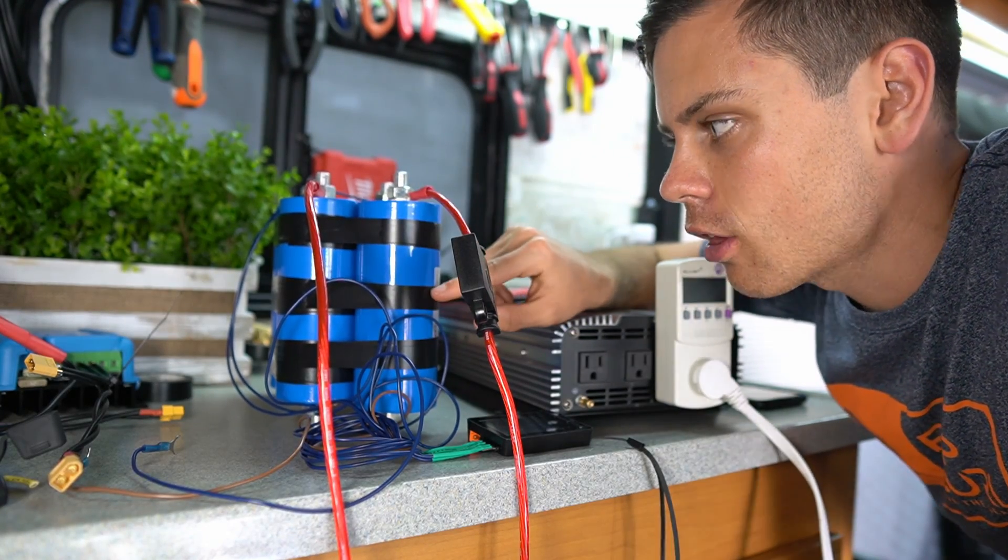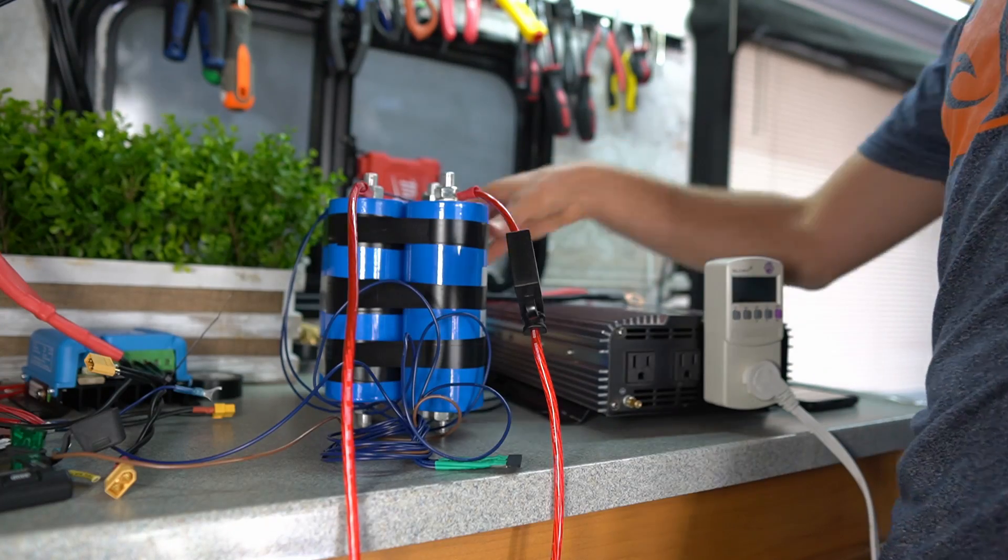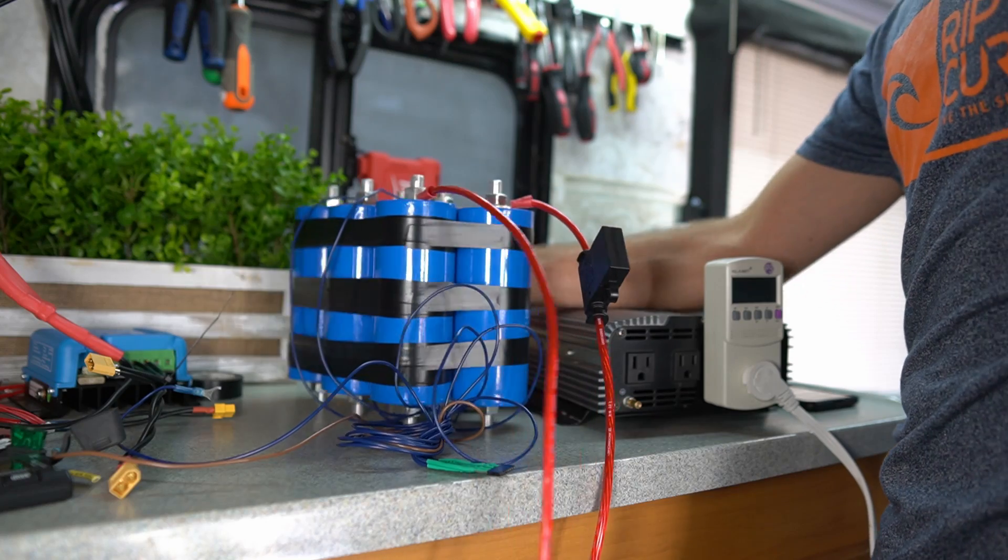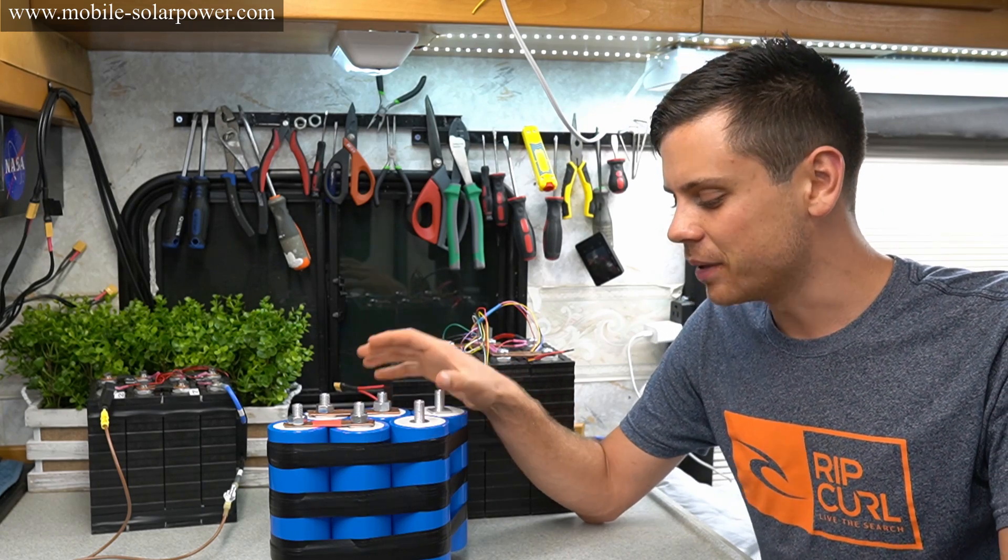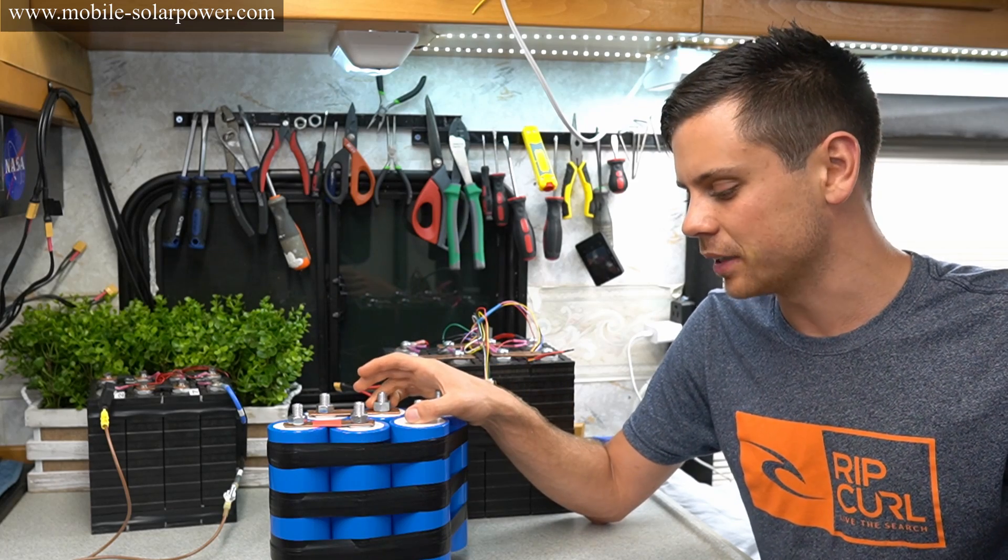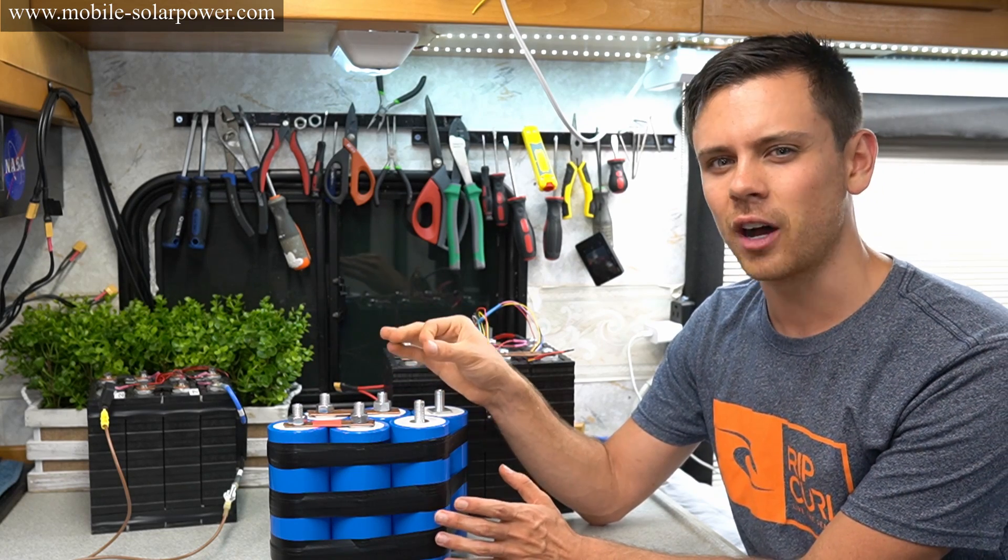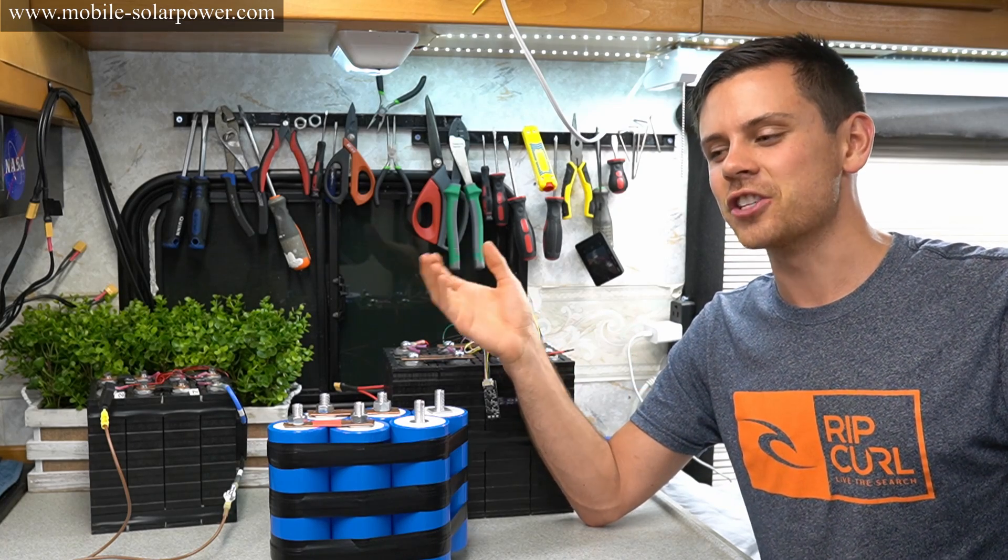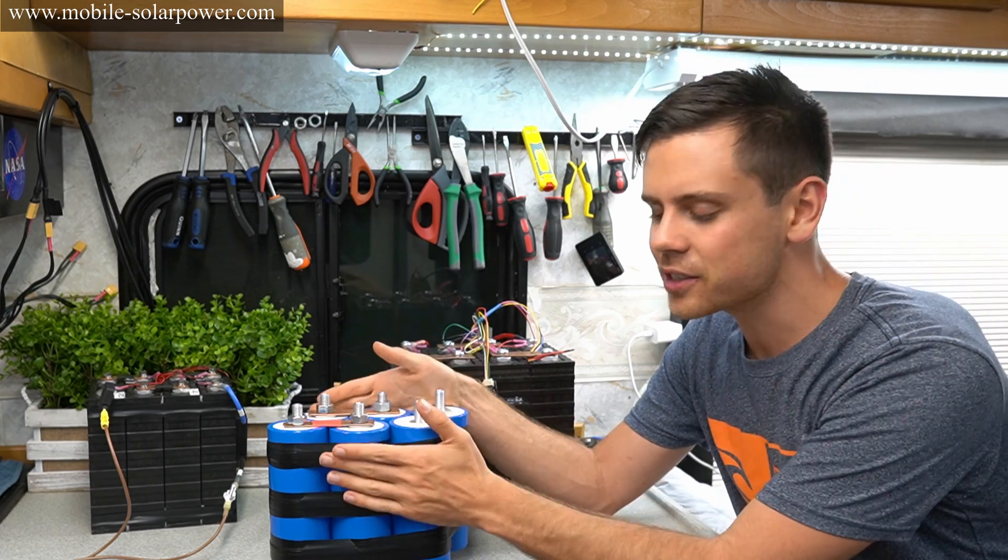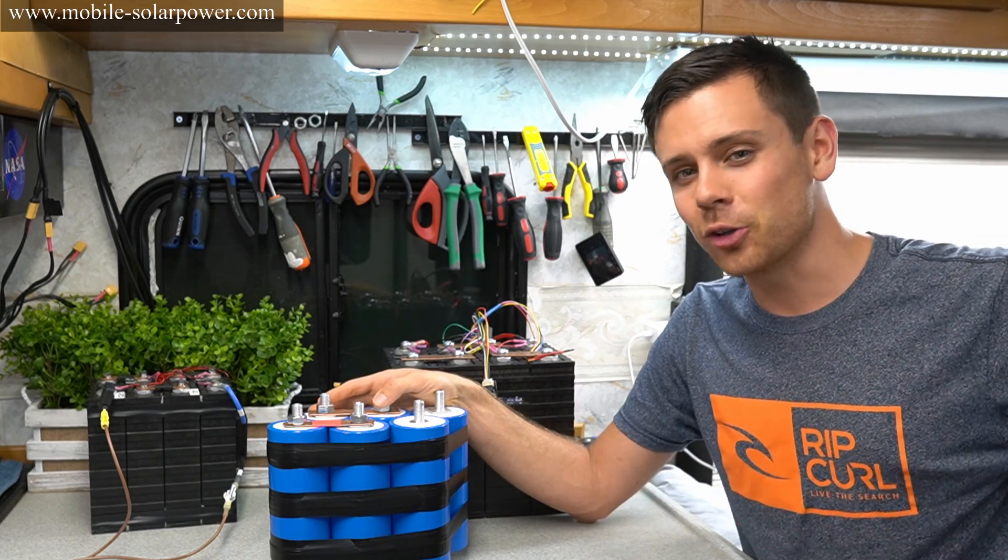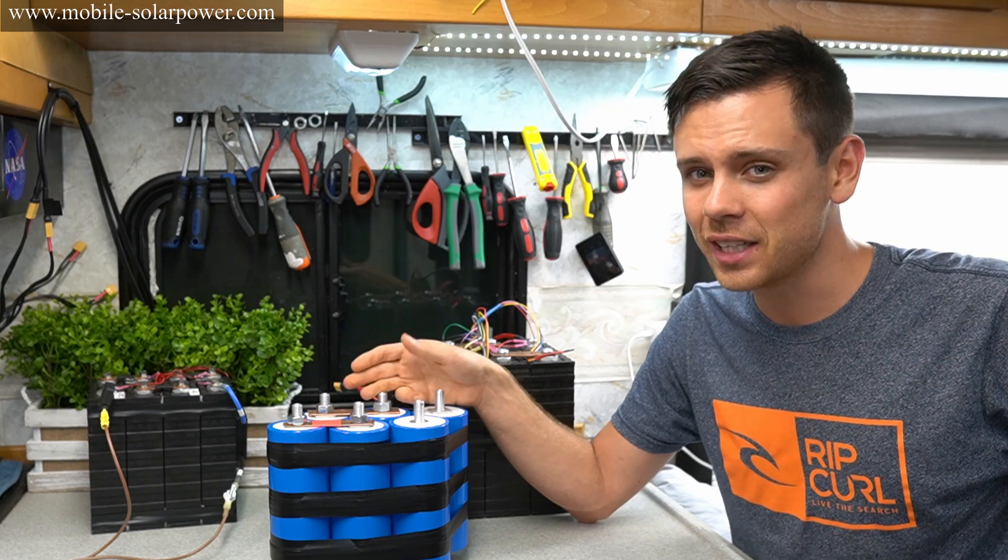So after reading some data sheets, I learned that the discharge efficiency is only 85% on this chemistry. So maybe that's where we're getting our loss from. After messing with these batteries, lithium iron phosphate stands ahead. I think I know why everyone's using those ones instead. So what should we think about lithium titanate batteries? They are very interesting. They are fun, but I don't think that they are good for 12 or 24 volt solar power system application.